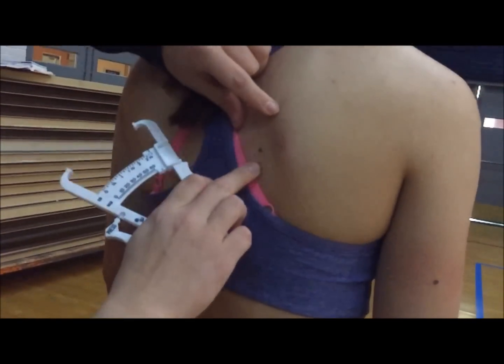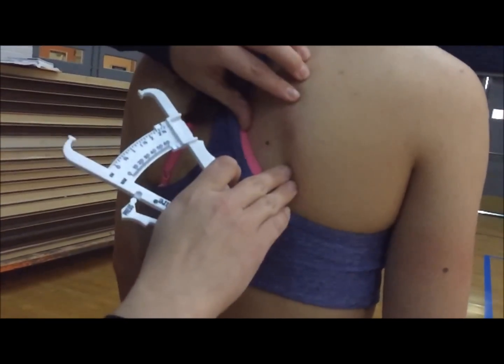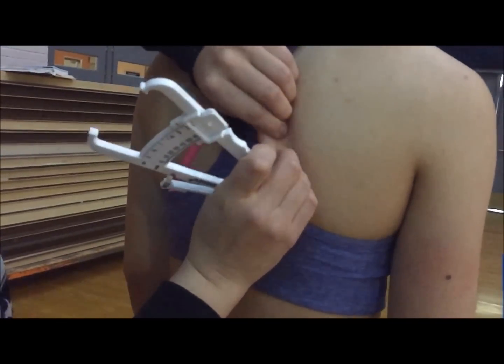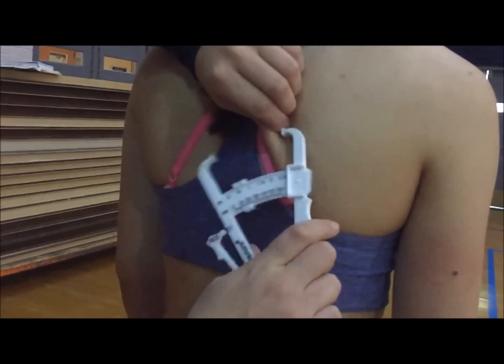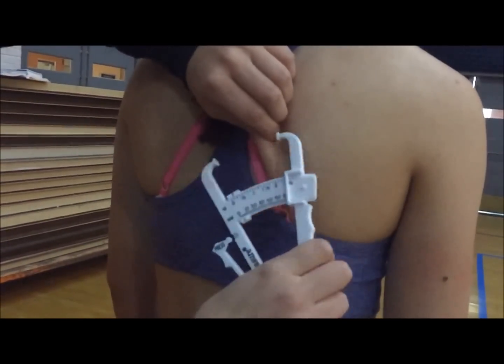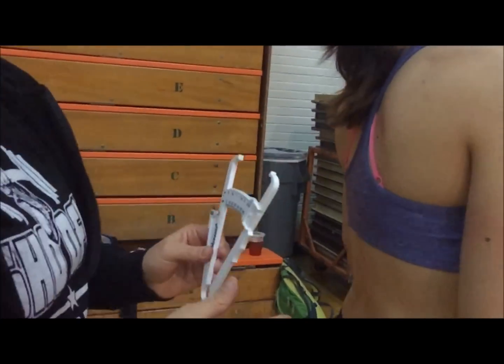For the subscapular, make sure that you are at a diagonal fold and that you separate the skin from the muscle. Make sure to maintain your pinch and that the caliper is directly on the skin. Reset.